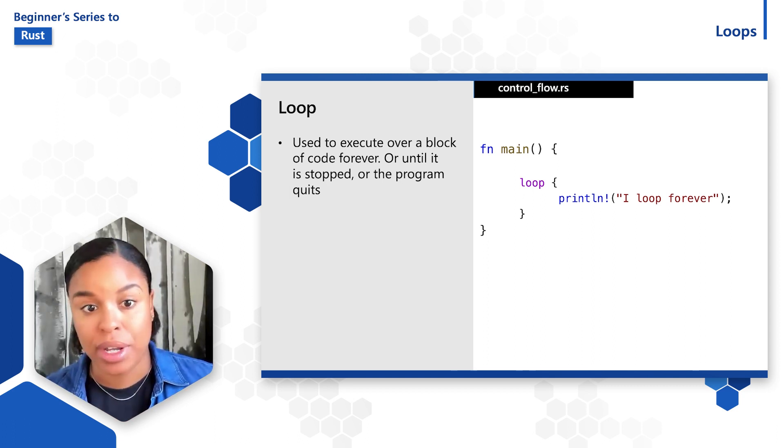you see inside the main function, we use the loop keyword, and then within braces, there's a println macro line that says I loop forever. Currently, this loop will just do that. It will run through and print this statement over and over.